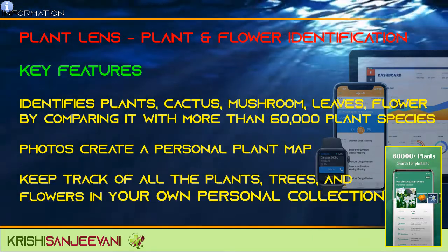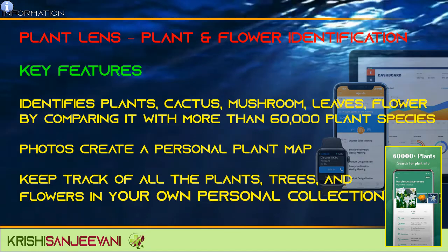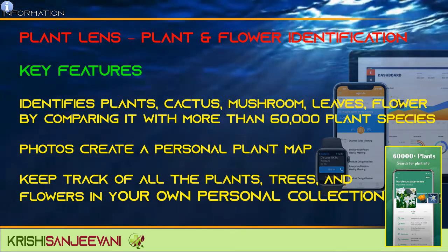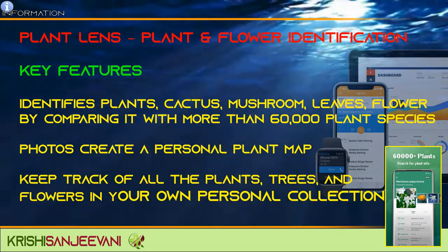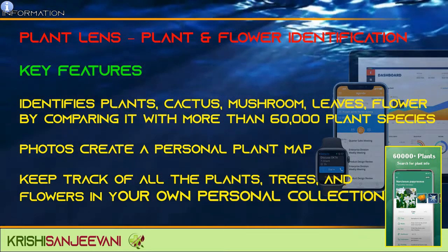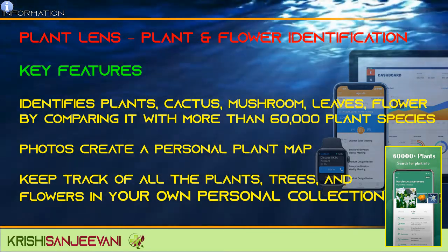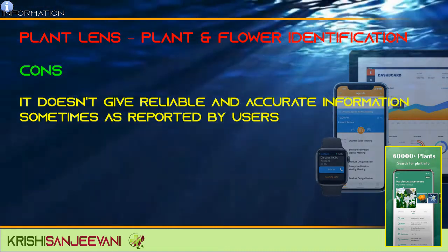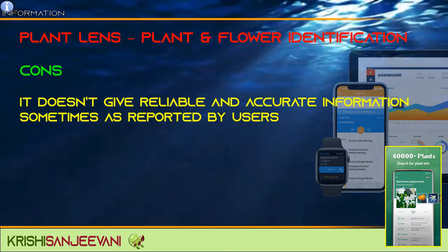Plant Lens — plant and flower identification. Key features and pros: identifies plants, cactus, mushroom, leaves, and flowers by comparing with more than 60,000 plant species; photos create a personal plant map; keep track of all plants, trees, and flowers in your own personal collection. Cons: It doesn't give reliable and accurate information sometimes, as reported by users.